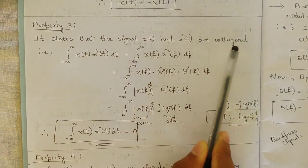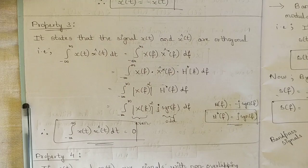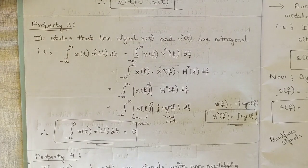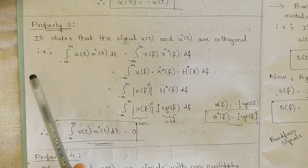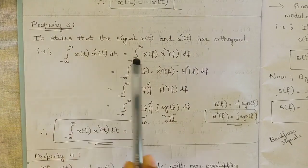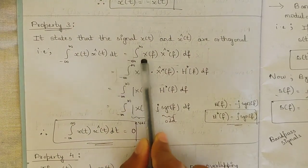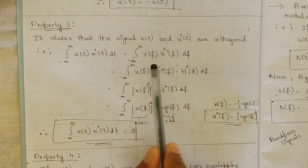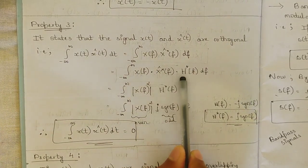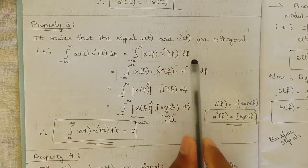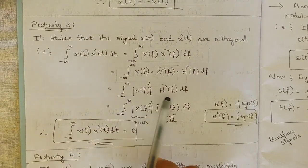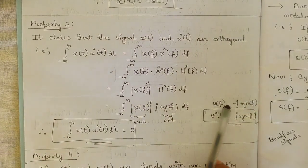Property 3 states that x(t) and x̂(t) are orthogonal, meaning their inner product equals zero. To prove this, we evaluate the integral from −∞ to ∞ of x(t) · x̂(t) dt. Converting to the frequency domain, this becomes the integral of X(f) · X̂(f) df, and substituting x̂(f) = X(f) · H(f), we consider the impulse response as well.